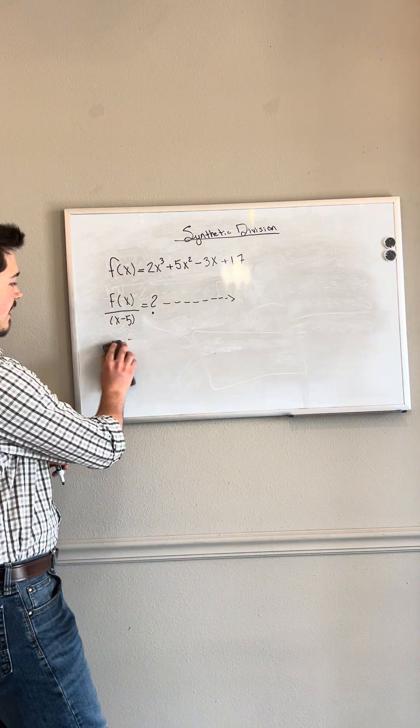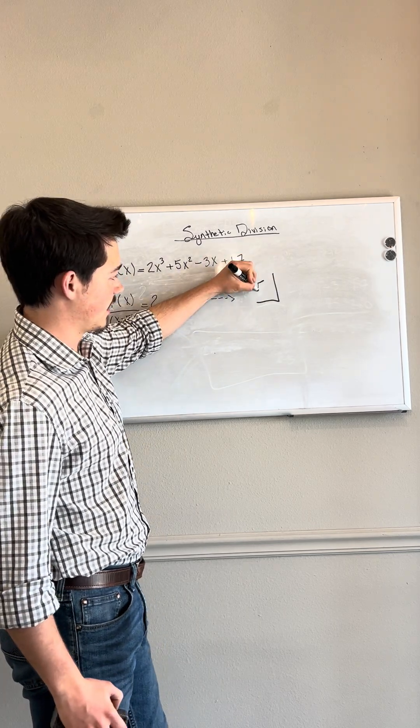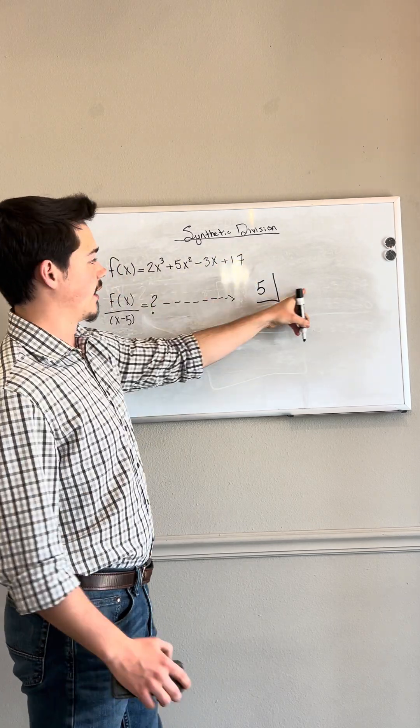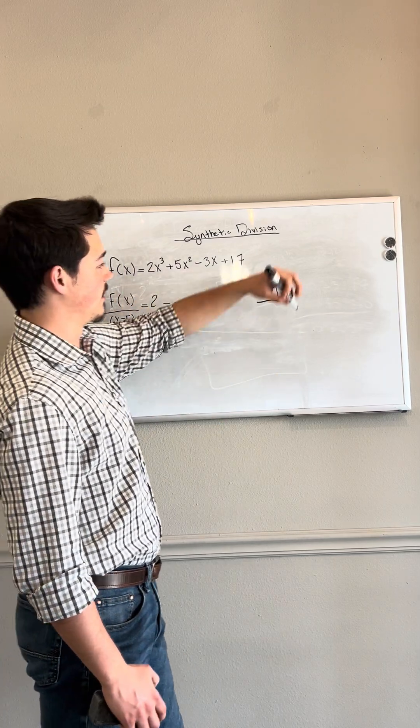In this case, c is 5. The way we solve this is we put this little box here with c in it, so in our case 5, then we'll line up each of our coefficients from the polynomial that we're dividing, so it'll be 2, 5, negative 3, 17.